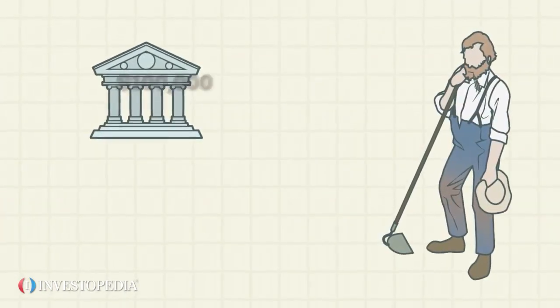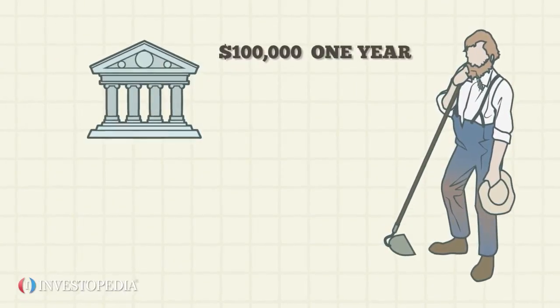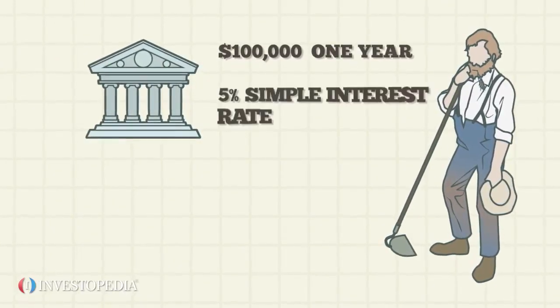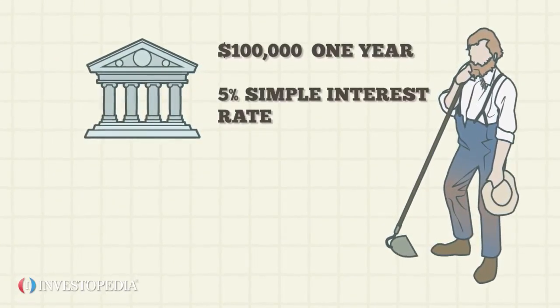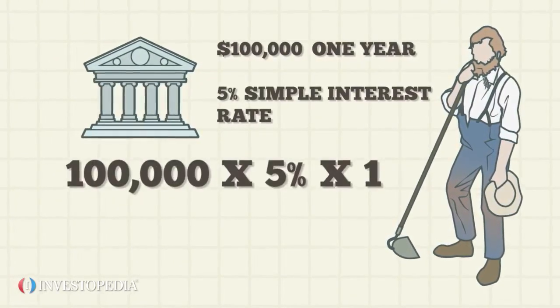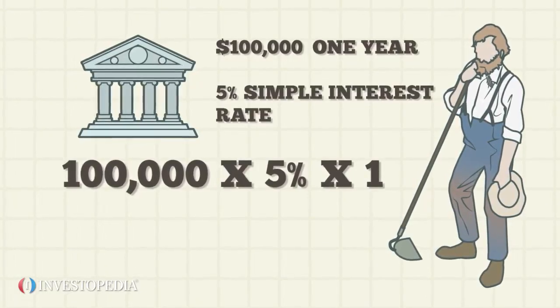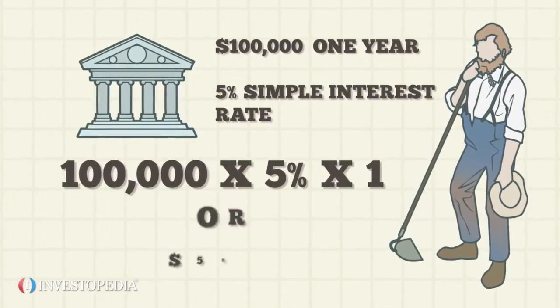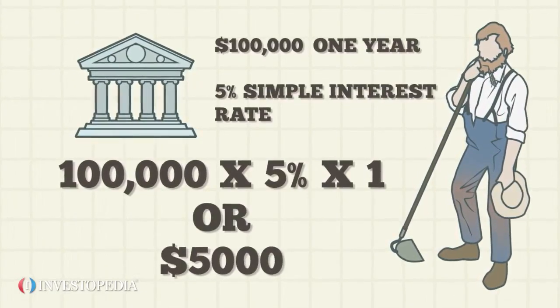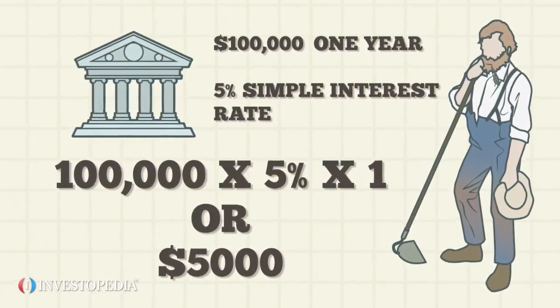For example, if Mr. Farmer borrows $100,000 for one year at a simple interest rate of 5%, he will pay 100,000 times 5% times 1, or $5,000, to borrow the money for one year.